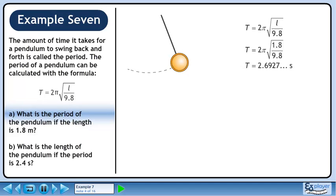Evaluate this to get 2.6927 continuing. The period of the pendulum is approximately 2.7 seconds.